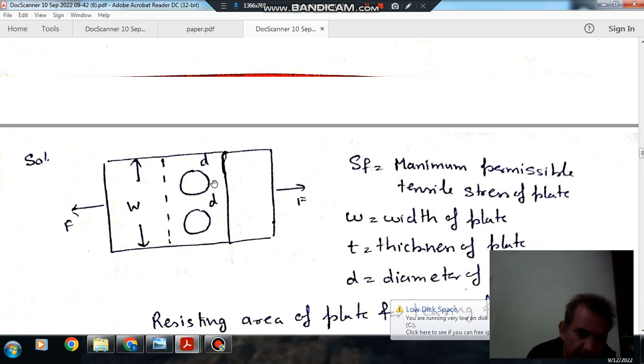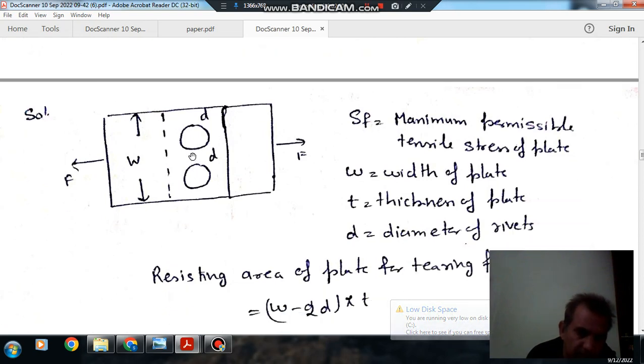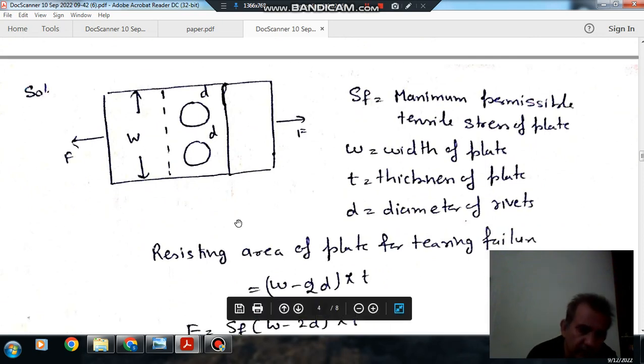And thickness is T. So the area responsible for resisting the tensile failure is W minus 2D into thickness of the plate.